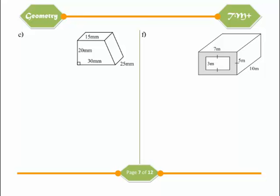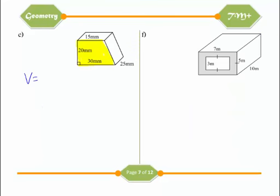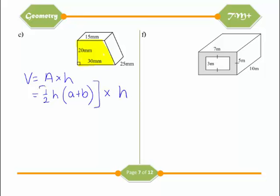Next is a trapezoidal prism. The trapezium is the cross-section. Volume is area times H, and the area of a trapezium is one-half times h times (a + b). So we have one-half times the trapezium height of 20, times (15 + 30), then multiplied by the height of the prism which is 25.